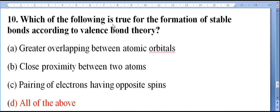Which of the following is true for the formation of stable bonds according to valence bond theory? First one: greater overlapping between atomic orbitals. Second one: close proximity between two atoms. Third one: pairing of electrons having opposite spins. Fourth one: all of the above. The right answer is all of the above.